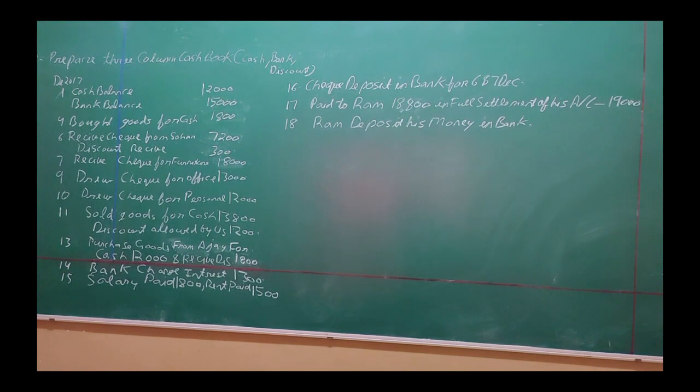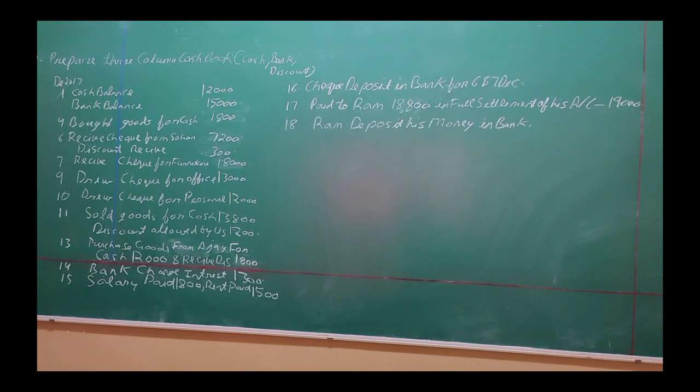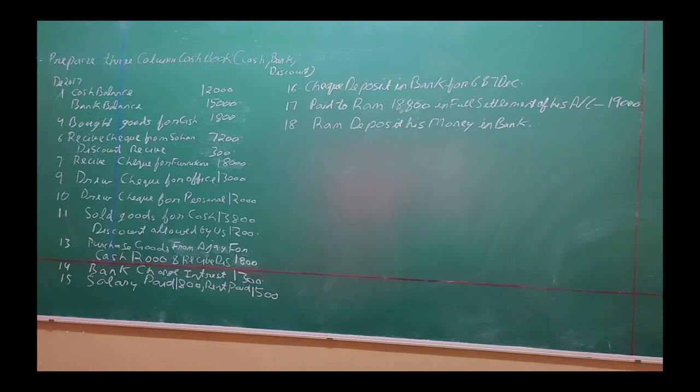Okay student, now you have to do this question. Prepare a three column cash book with cash, bank, and discount columns. Date is 2017 December. 1st December: cash balance 12,000, bank balance 15,000.